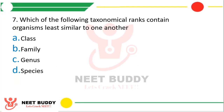Question 7: Which taxonomical rank contains organisms with the least similar characters? Option A class, option B family, option C genus, option D species. The correct answer is option A — class contains the organisms which are least similar to one another.